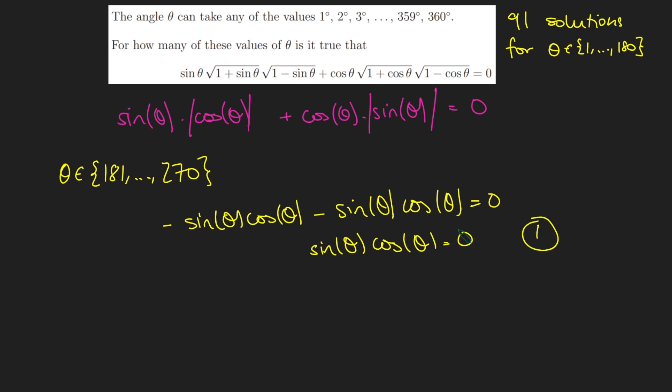And finally the final case: θ is between 271 and 360. What can I say about this equation? Well cos(θ) goes back to being positive, and absolute value of sin(θ) is still negative. So I've got a plus here, a minus here, and we're going to get something very similar to the second case where we get a plus sign here, a negative sign here, and it's just going to be zero. And so we're going to get another 90 solutions here. And so in total we've got 91 plus another 91, that's a total of 182 solutions to this equation here. And that would be our final answer here.